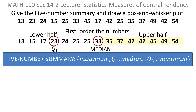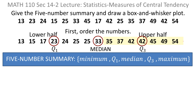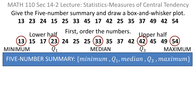Then you move over to the upper half and find the median of the upper half, and that's the third quartile value. If you look at that, you'll see that 42 is the median of the upper half, so that's the third quartile value. The last two numbers are the minimum and the maximum. The minimum is obviously 13, and the maximum is obviously 54.